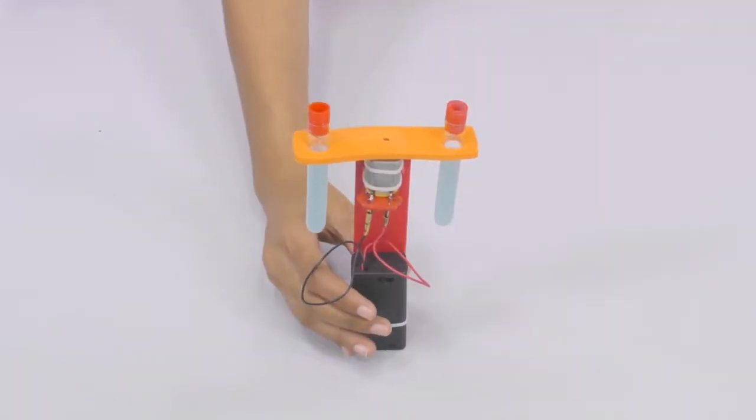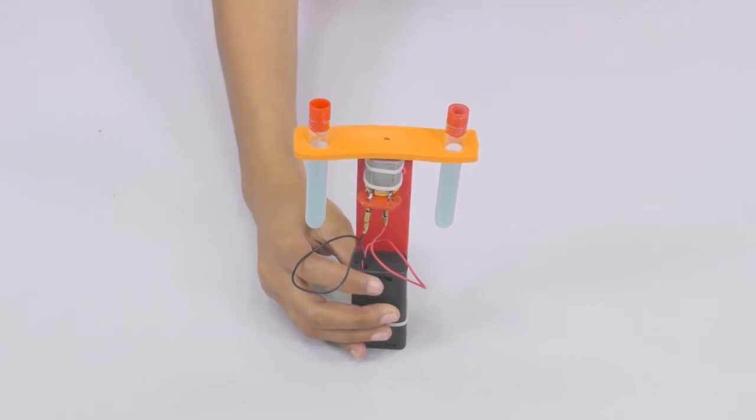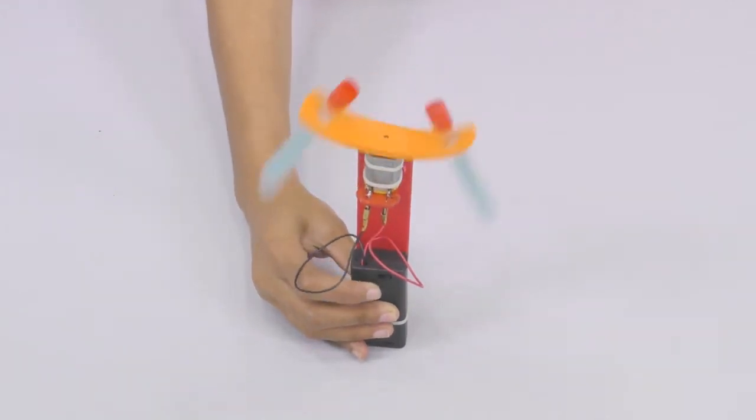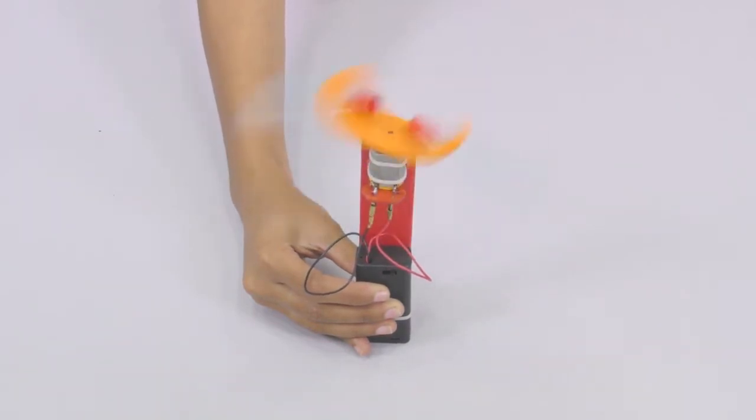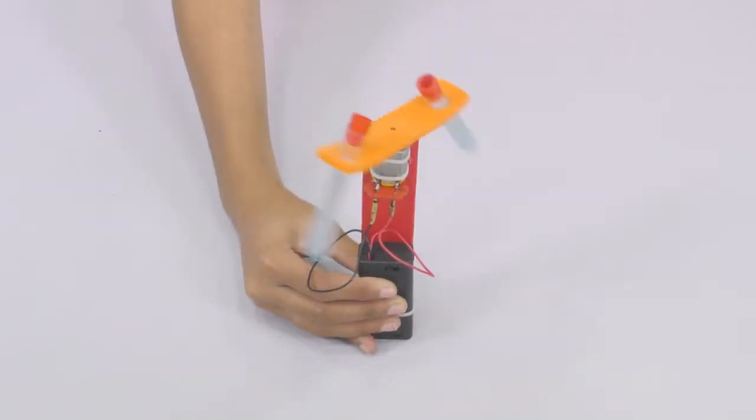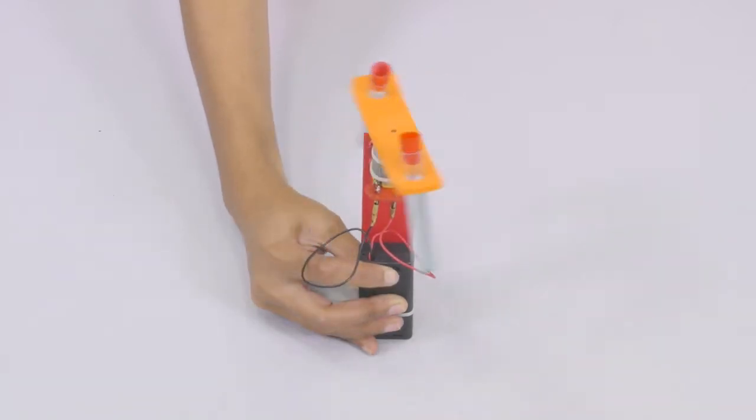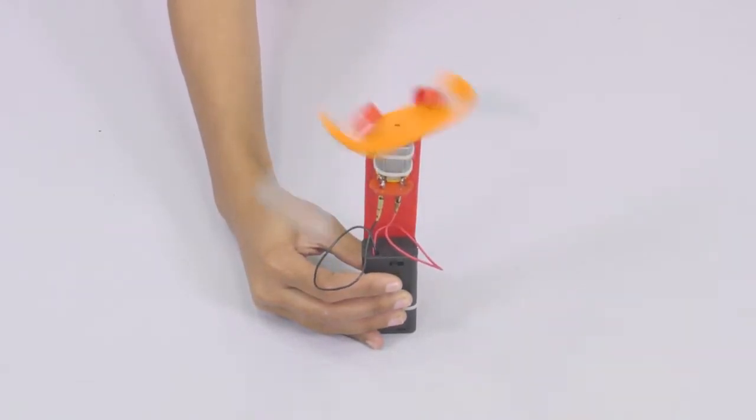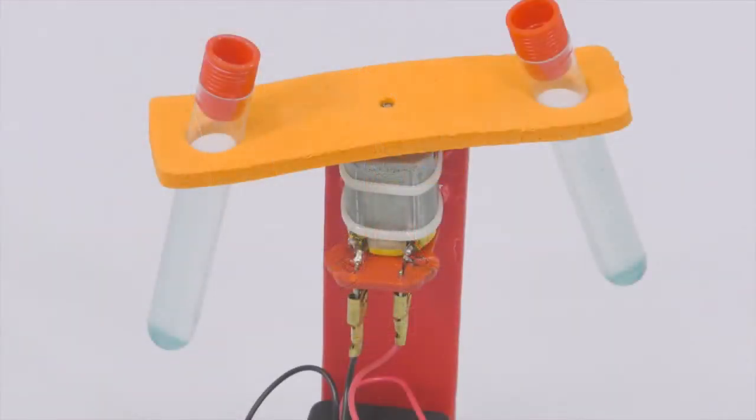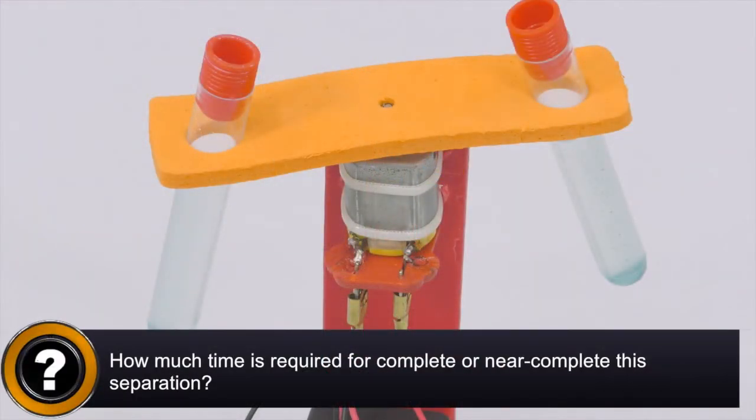Now, turn the centrifuge assembly on by switching on the battery holder switch and let the centrifuge run for about 2 minutes before turning it off. Run the centrifuge in increments of 30 seconds. Stop the centrifuge every 30 seconds to check the clarity of water. How much time is required for complete or near complete separation?